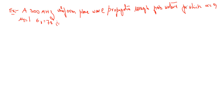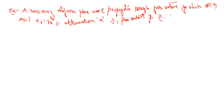They are asking to calculate: the attenuation constant alpha, second the phase constant beta, third the wavelength lambda, and fourth the intrinsic impedance eta. So these are the four parameters you have to find out. The frequency is 300 megahertz, the conductivity is 0, mu_r is 1, and epsilon_r is equal to 78.